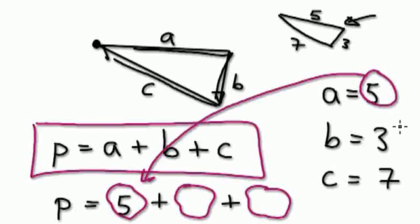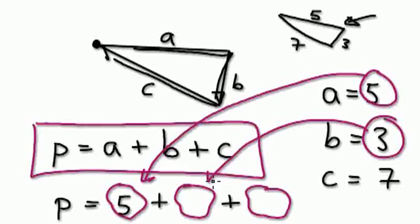So this would be 5, and B, you put it into here. So B is 3 here, and C, put it into here.